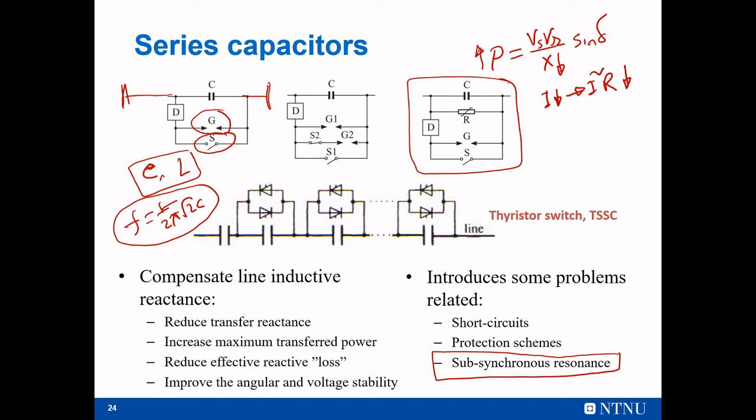The series capacitor also brings sub-synchronous resonance - some oscillation actually lower than the fundamental frequency. Since we have this series capacitor, and the network including the transmission line and the generator reactors has this inductance L, this C and L have a resonance frequency which is 1 over 2π times the square root of L over C. So if there is any disturbance in the system, it introduces this sub-synchronous resonance oscillation. In order to damp that, we need to install some damping circuit. It is also possible to connect the capacitor through a thyristor - it's called the thyristor switched series capacitor. Several of these are connected in a transmission line. The amount of capacitor can be different based on loading conditions: when we have high loading, we need more capacitor; when we have low loading, we need less. We can bypass the capacitor through the thyristor valve. That is the advantage the thyristor brings.